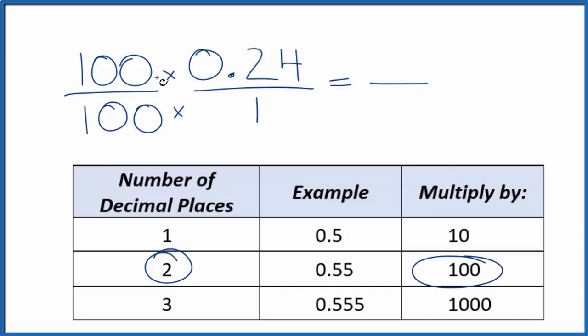So 100 times 0.24, that gives us 24. 100 times 1, that gives us 100. So now we have a fraction.